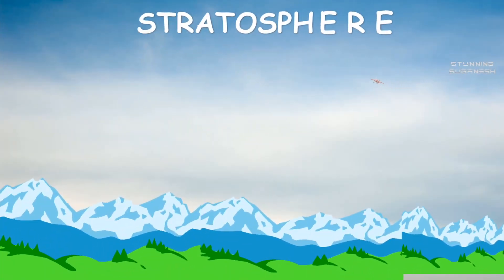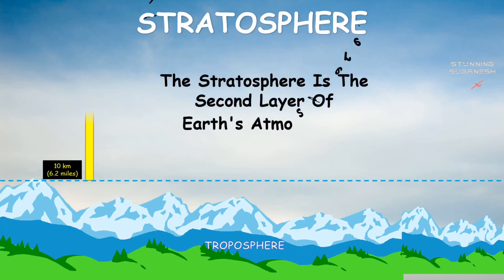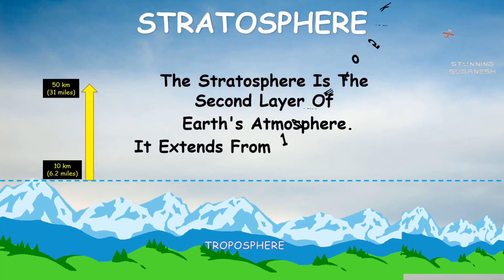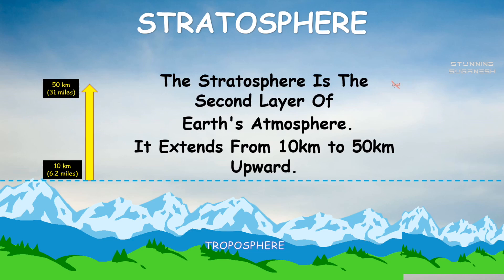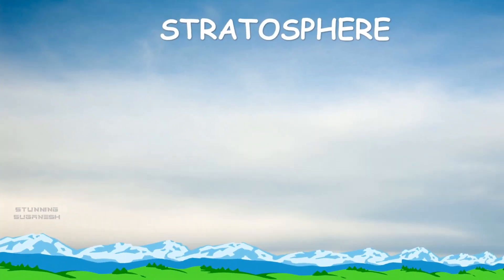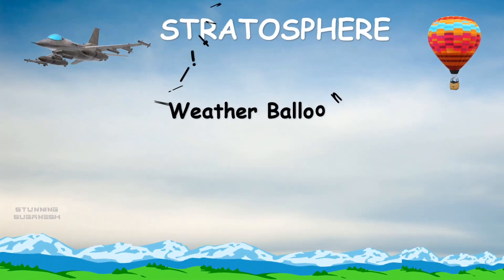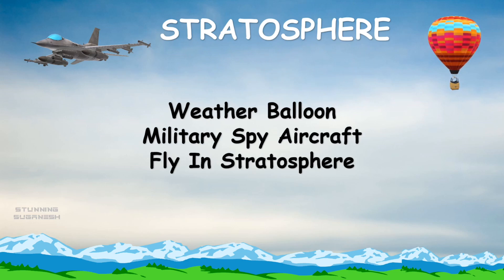The stratosphere is the second layer of Earth's atmosphere. It extends from 10 kilometers to 50 kilometers upward. Weather balloons and high-altitude spy aircraft fly in the stratosphere.